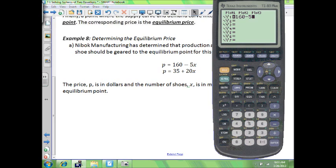160 minus 5X, 35 plus 20X. Now our window here should be okay. Let's actually change our Y max, make it over 160, so let's just make it 200 here. Y min 0 makes sense for the price. X min, X max should be okay there. So let's graph it.